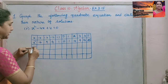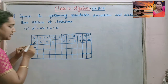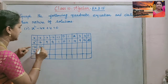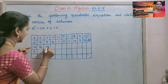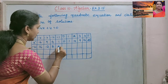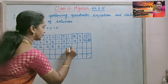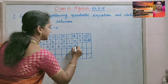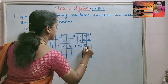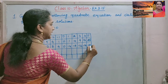For the minus 4x column: since minus times minus is plus, the values are 16, 12, 8, 4, 0, then minus 4, minus 8, minus 12, minus 16, and minus 20.